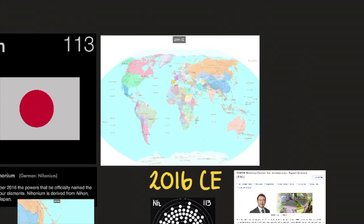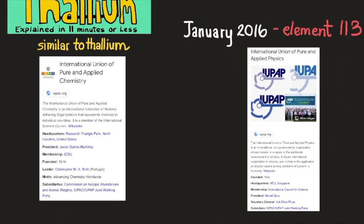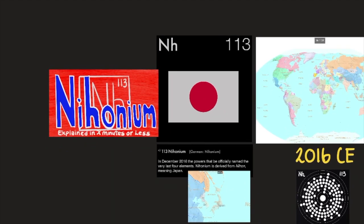In January 2016, the discovery of element 113 was recognized by the International Union of Pure and Applied Chemistry, or IUPAC, and the International Union of Pure and Applied Physics, or IUPAP. The discoverers named it nihonium after the Japanese word for Japan. The name nihonium was approved by IUPAC in November of 2016.